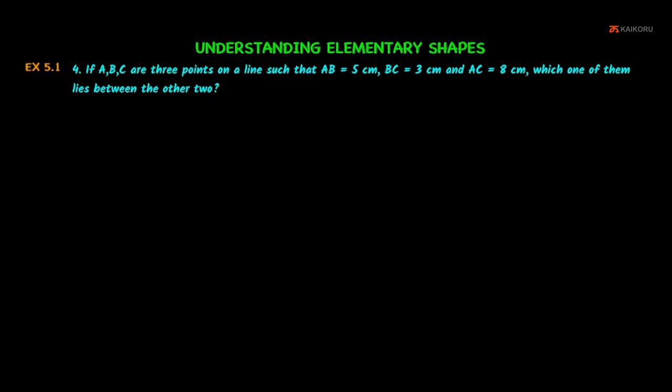So if you look at this, A, B, C are three points on a line. This is the line with points A, B, C.